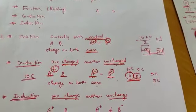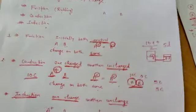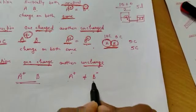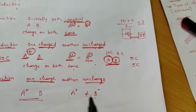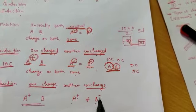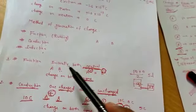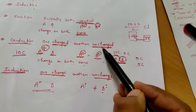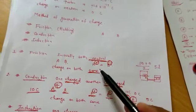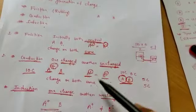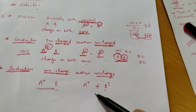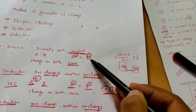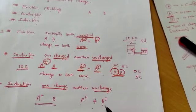After charging by induction, the amount of charge on the two bodies will not be the same, and the polarity will also not be the same — it will be opposite. To summarize all three methods: in friction both start uncharged; in conduction one is charged and one is uncharged. In friction and conduction the amount is the same, but polarity is opposite in friction and same in conduction. In induction, amount is not the same and polarity is opposite.